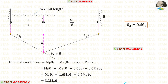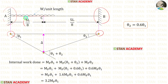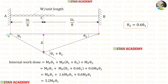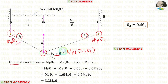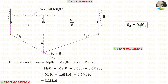Now let us find the internal work done. In the fixed end A, we have a plastic hinge; in the fixed end B, we also have a plastic hinge; and under the load at 3L/8, we have a plastic hinge — so three plastic hinges in total. The internal work done is: Mb·theta1 (at A) + Mb·(theta1 + theta2) (at the intermediate hinge) + Mb·theta2 (at B). Substituting theta2 = 0.6·theta1, the total internal work done = 3.2·Mb·theta1.